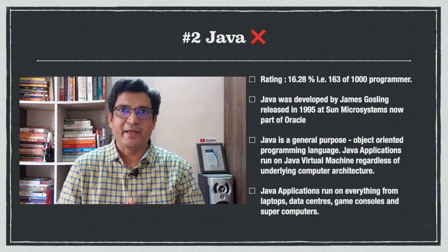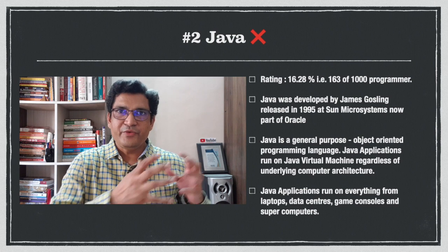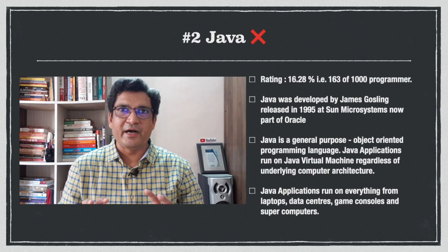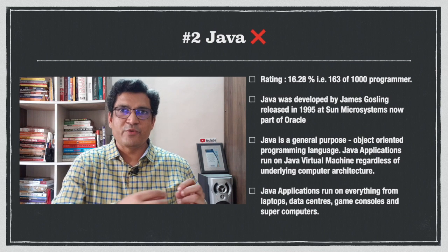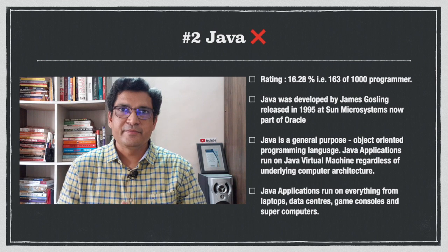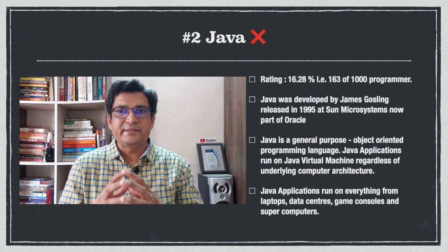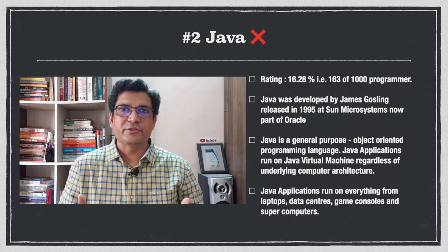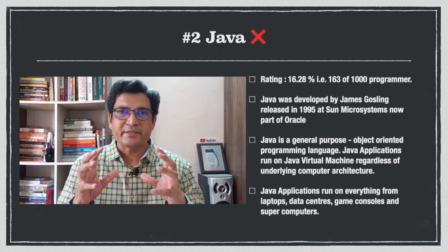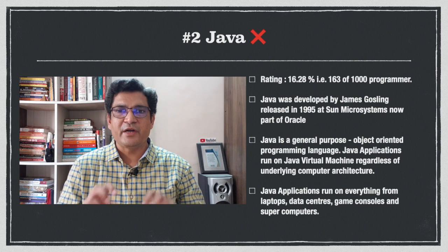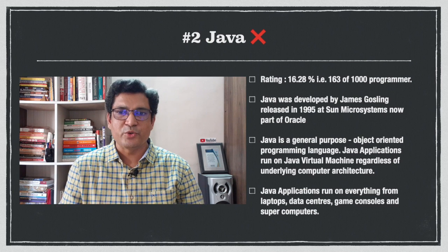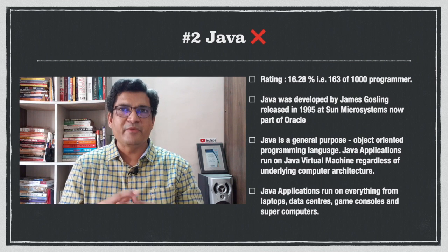At number 2 is Java. You can see the difference in popularity between Visual Basic, C#, and Java — this is a very important question everyone asks: should I focus on .NET or Java or Python? Java was developed by James Gosling and released in 1995 at Sun Microsystems, now part of Oracle. Java is a general-purpose object-oriented programming language. Java applications run on the Java Virtual Machine regardless of the underlying computer architecture, from laptops to data centers to game consoles and supercomputers.